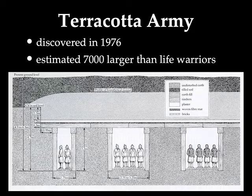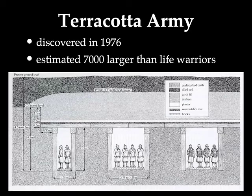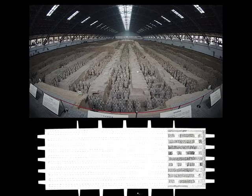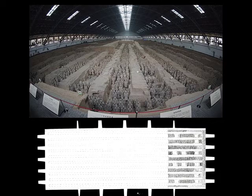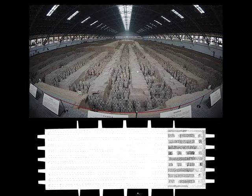It is the largest archaeological dig anywhere in the world. An estimated 7,000 larger-than-life warriors are buried through a series of trenches. They were not meant to be viewed — they were never meant to be seen. They were placed underground as part of the Emperor's tomb, preserving for all time a replica of his actual army. They don't know the exact number because they haven't completely uncovered the whole thing, and they have been working tirelessly since the 1980s to uncover and reassemble this massive ceramic army.